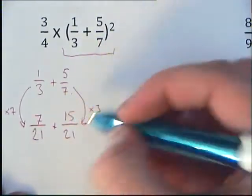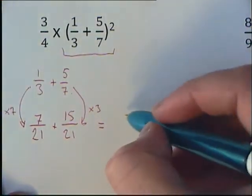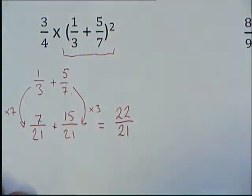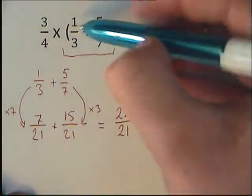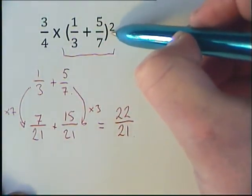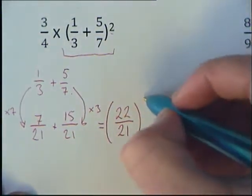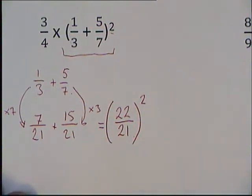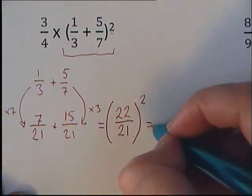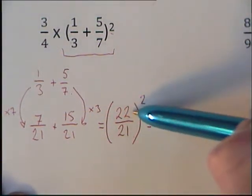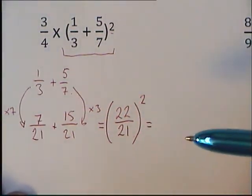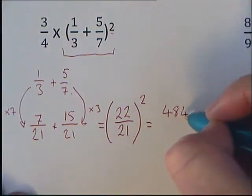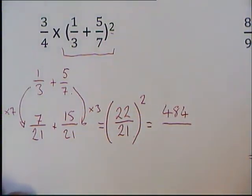If we work all that out we're going to get 22/21. Now don't forget these brackets where we started - we haven't dealt with the indices yet. This fraction is still in brackets and all squared. Same as questions 1 and 2, we're going to square the top number and square the bottom number. 22 squared is 484, and 21 squared is 441.